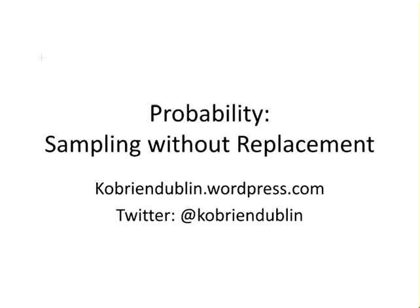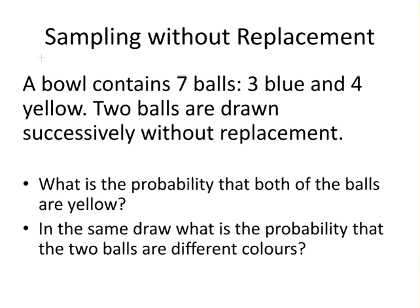In this presentation we're going to look at probability, and in particular, sampling without replacement. Here's a question: a bowl contains seven balls, three blue and four yellow. Two balls are drawn successively from the bowl without replacement. What is the probability that both balls are yellow, and what is the probability that both balls are a different colour?